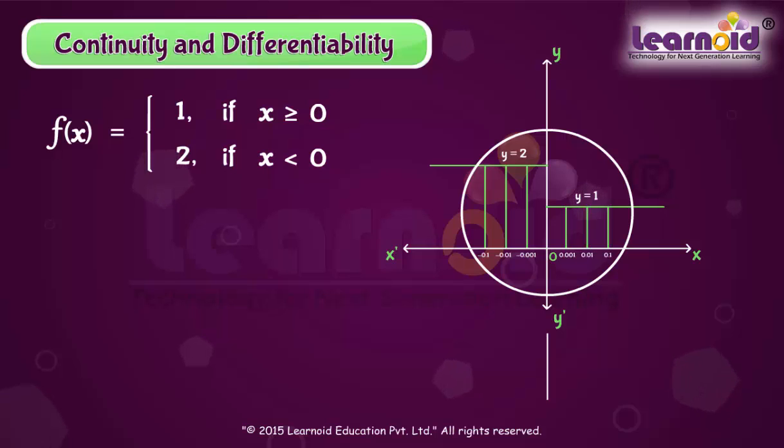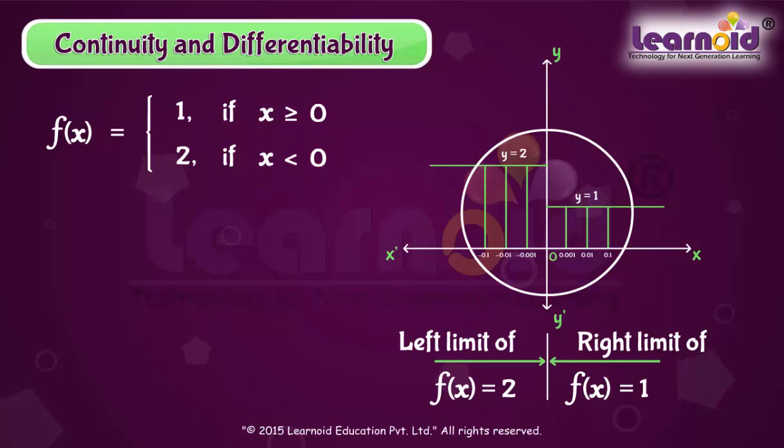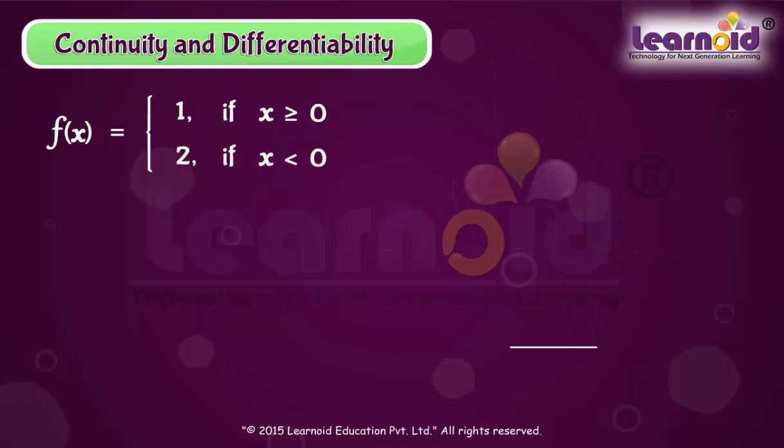If we use left and right limits of function f(x), they do not coincide. We cannot draw the graph of such functions without lifting pens from the paper or in one stroke. It means this function is not continuous at x is equal to 0.